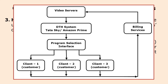DTH service providers like Amazon Prime, Netflix, and Disney Hotstar provide a program selection interface through which customers worldwide can look for and select the required video or movie to watch. Based on the type of video or movie watched, the billing amount is calculated and stored in the video servers. This is how home entertainment has been flourishing nowadays.